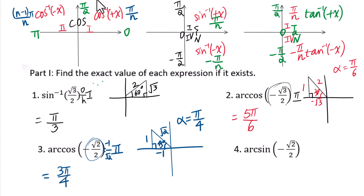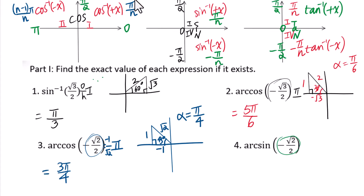Question 4: arc sine of negative square root of 2 over 2. Since this is negative, go to the fourth quadrant for inverse sine. Change this into negative 1 over square root of 2. With side lengths square root of 2 and negative 1, the reference angle is 45 degrees. In the fourth quadrant, we use the negative pi over n pattern, so the answer is negative pi over 4.